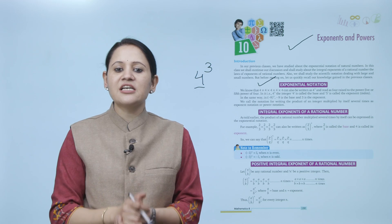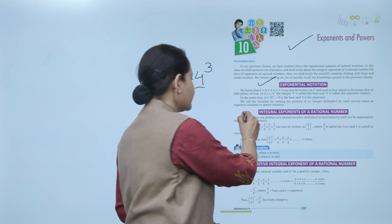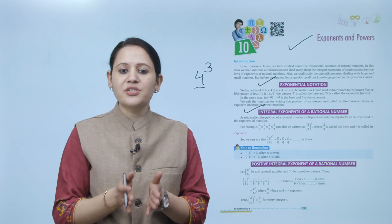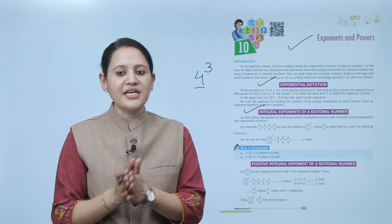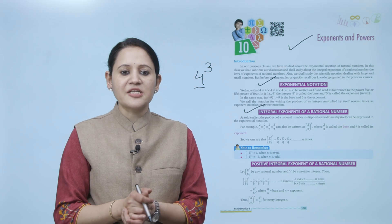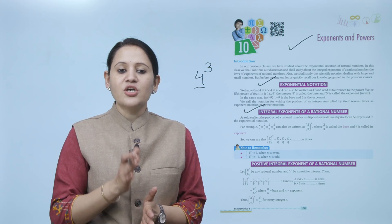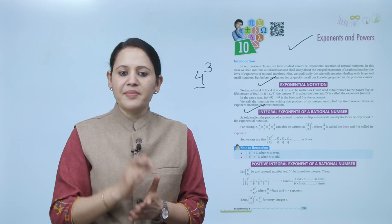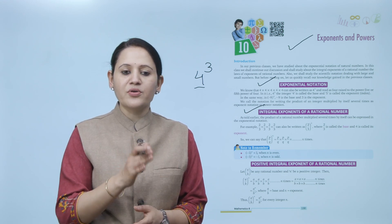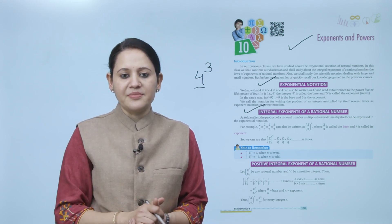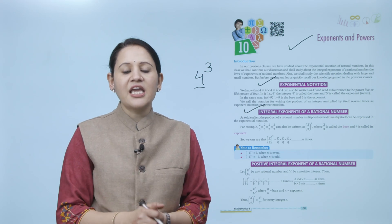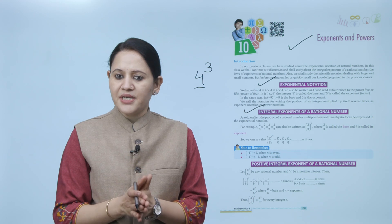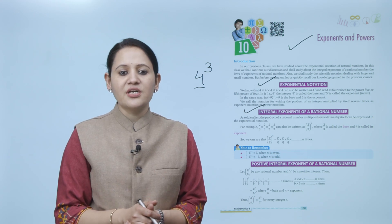Next is integral exponent of the rational numbers. The product of a rational number multiplied several times by itself can be expressed in exponential notation. For example, (2/3) multiplied by (2/3) multiplied by (2/3) multiplied by (2/3) — that is, 2/3 multiplied 4 times — can also be written as (2/3) to the power 4, where 2/3 is called the base and 4 is called the exponent.